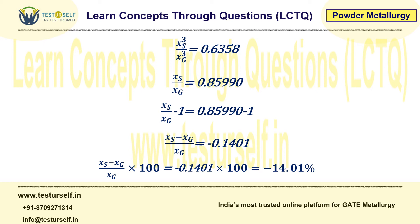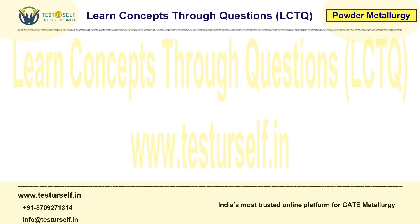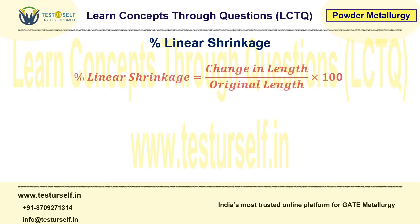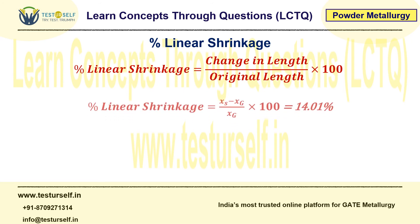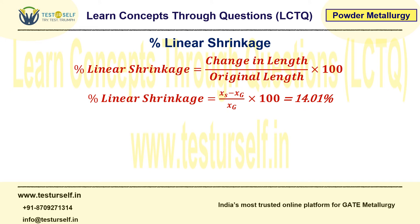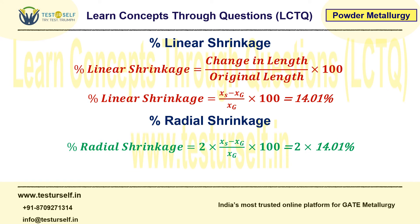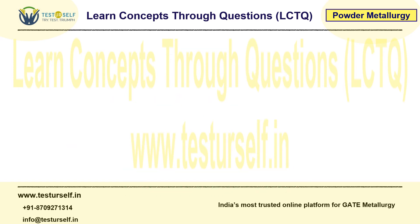Don't worry about the minus sign — it simply shows this is shrinkage, not expansion. In summary, the percentage linear shrinkage is change in length upon original length × 100, and the answer is 14.01%. If instead of linear shrinkage they had asked for radial shrinkage, we would just multiply by a factor of 2, because in the cylindrical volume formula V = pi r² h, the radius appears as a squared term. So radial shrinkage would be 28.02%.